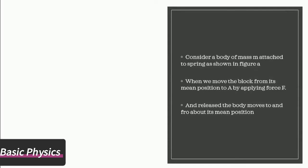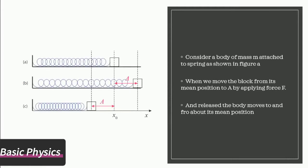When we move the block from its mean position to A by applying force F and release it, the body moves towards mean position due to restoring force and moves towards other extreme position due to inertia. Hence the body moves to and fro about its mean position.